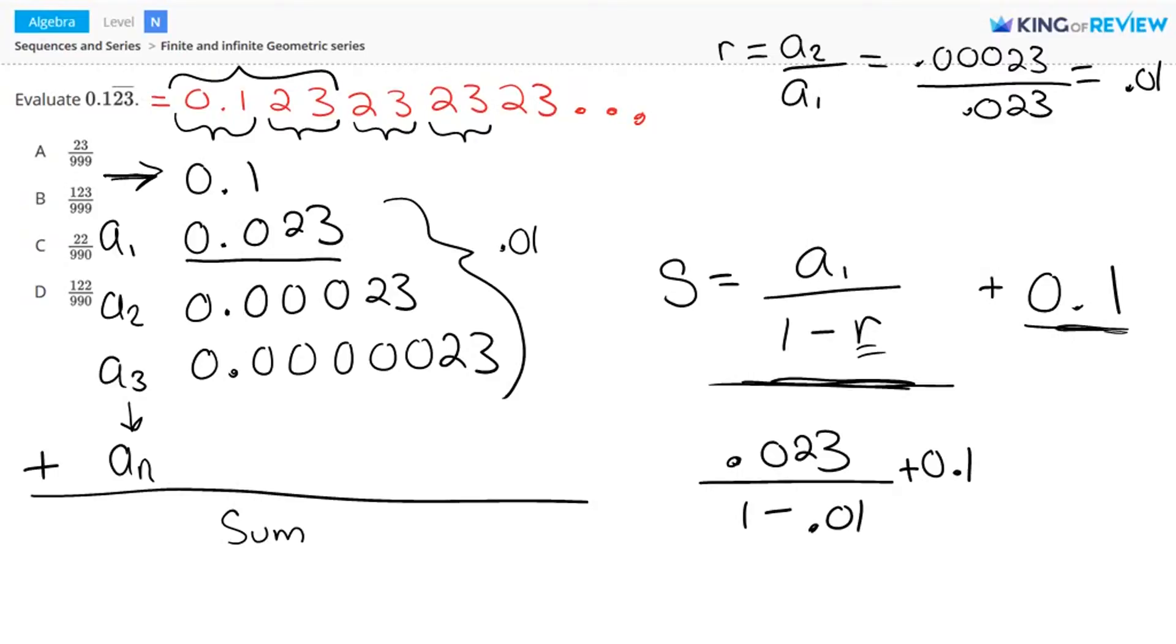This term here again, that's this first portion of the decimal before it starts repeating. So now this is equal to 0.023 over 0.99 plus 0.1.